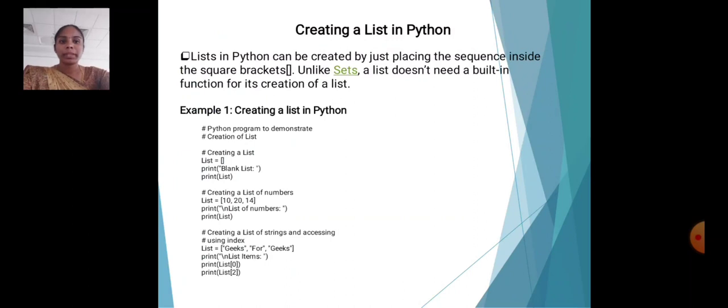Creating a list in Python. List in Python can be created by just placing the sequence inside the square brackets. Unlike a set, a list does not need a built-in function for its creation.